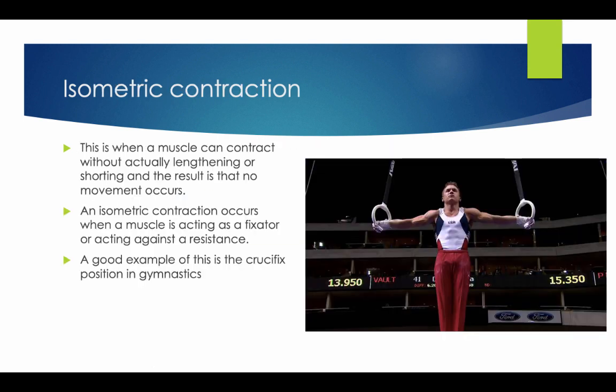Isometric contraction: this is when a muscle can contract without actually lengthening or shortening, and the result is that no movement occurs. An isometric contraction occurs when a muscle is acting as a fixator or acting against a resistance. A good example of this is the crucifix position in gymnastics.